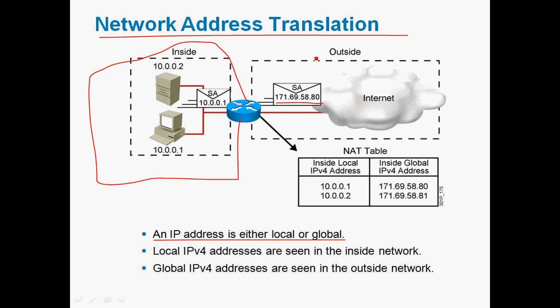Without NAT protocol we cannot connect to the internet, because there would be an IP conflict. In a local area network we can use only private IP addresses, so without using NAT protocol there will definitely be an IP conflict. In real time also, without NAT we cannot connect to the internet.